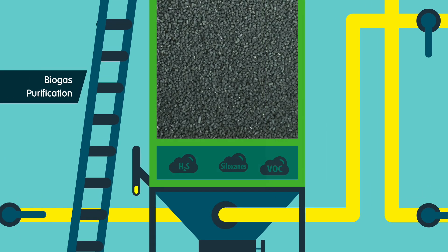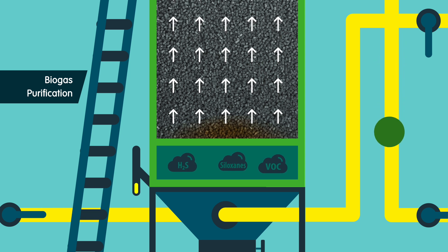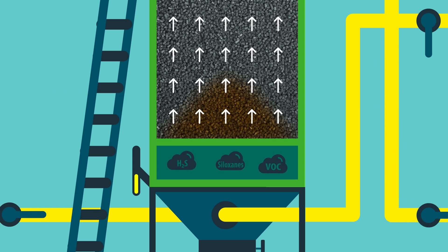As the biogas enters the vessel's media bed, pollutants are trapped and oxidized with the bion media. H2S molecules are destroyed, capturing sulfur and releasing oxygen or hydrogen. Siloxanes and VOC molecules are physically captured in the media.